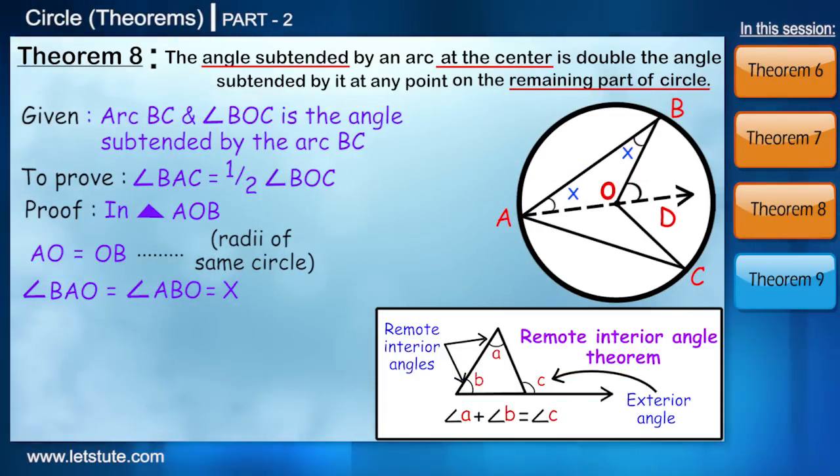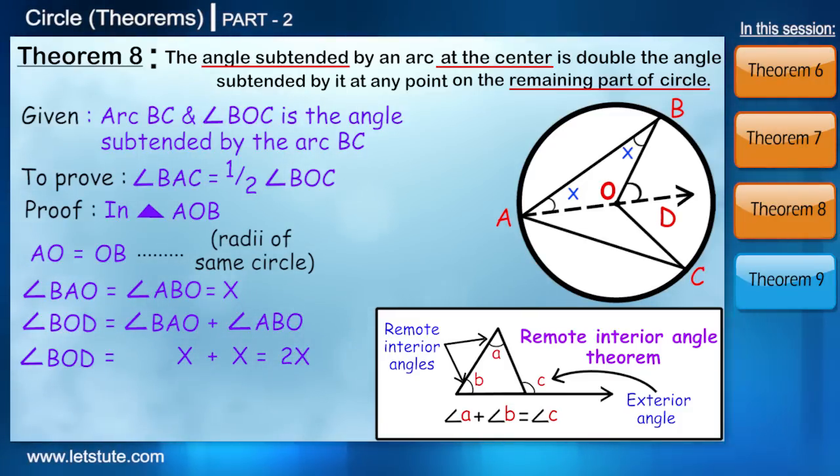Here we can see that angle BOD is nothing but the exterior angle of triangle AOB. And as I said in my introduction, using the exterior angle theorem or also called as remote interior angle theorem, we can say that angle BOD is equal to angle BAO plus angle ABO which is nothing but 2X. So from this we can say that angle BOD is equal to 2X.